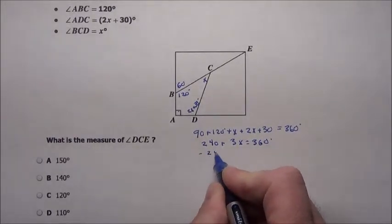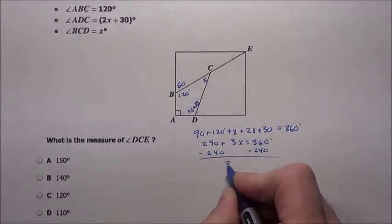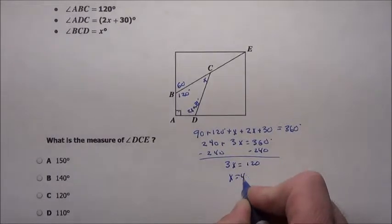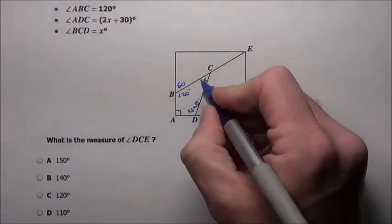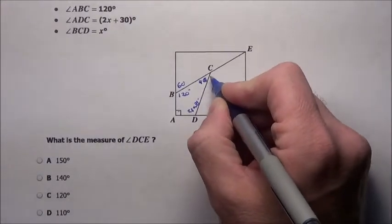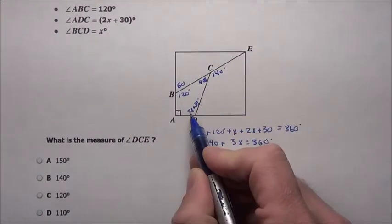To be honest, we haven't even read the question yet, but we know we're going to have to find x's value. 3x in this case is 120. Divide by 3, I've got x is 40. So I can find a lot of information now. If that's 40 right there, I now know this is 180 minus 40, so I know this is 140 right here.